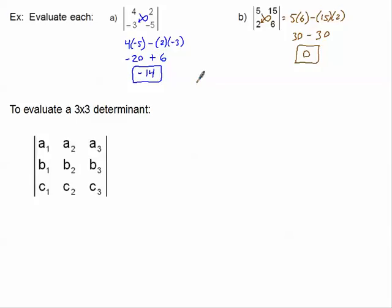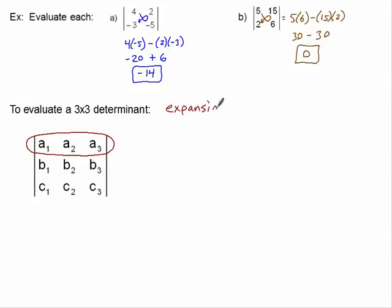That's how you do a 2x2. When we get into a 3x3 determinant, it gets a little bit more involved because obviously there are more elements. The first thing we need to do is decide which row or which column we want to use — we have a bunch of different choices, and it really doesn't matter which one we pick. I'm going to pick the top row and use those elements. This is a method called expansion by minors.